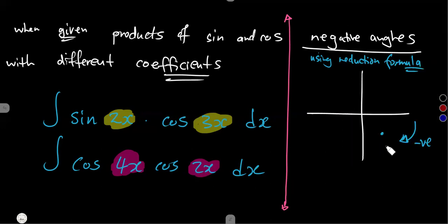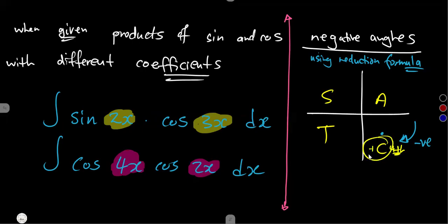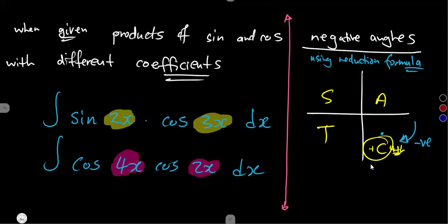In the fourth quadrant, from our CAST concept, cosine is positive and the rest are negative — meaning sine is negative. So for any negative angle that you have, you treat it as an acute angle. Every negative angle, treat it as an acute angle.